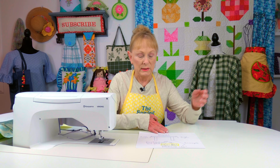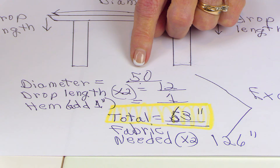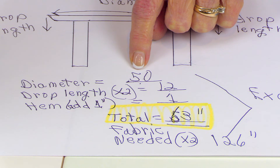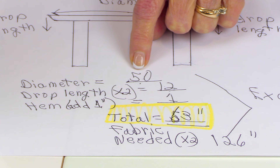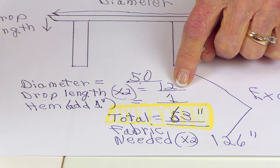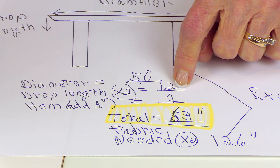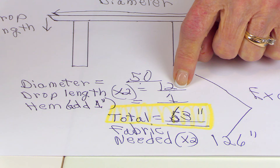I'm just going to throw some numbers in — I'm making up a size of a table. Let's say your table top diameter is 50 inches. Then I want a drop length of 6 inches on each side, so I'm going to multiply the drop length by two — that's 12 inches.